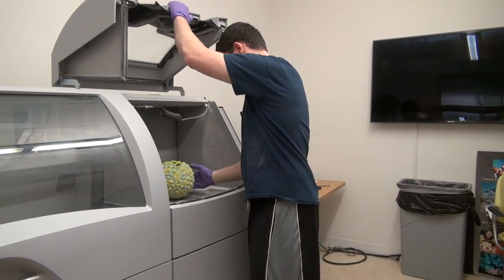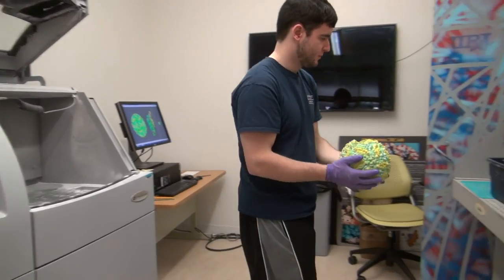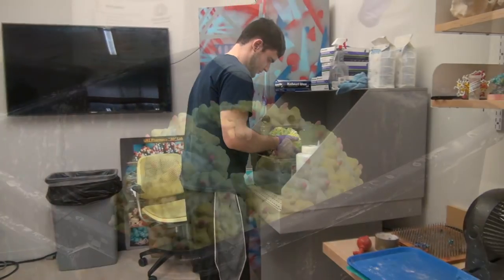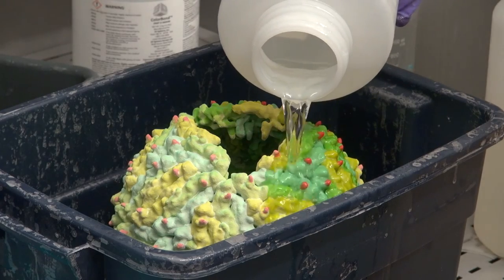After the powder has been completely removed, the model is taken to a post-processing station where resin is poured over it. This resin strengthens the model and adds definition to the coloring.